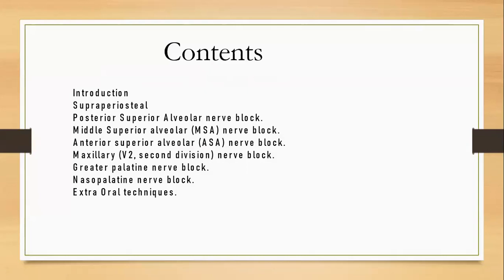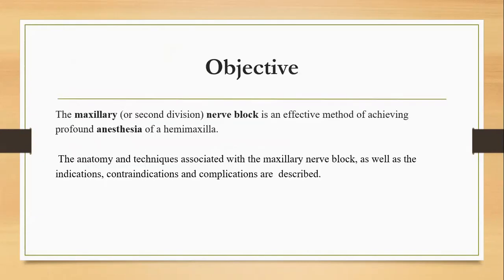First, we will deal with the introduction part, then the supraperiosteal injection, the PSA nerve block, the middle superior alveolar nerve block, the anterior superior alveolar nerve block, the maxillary nerve block, the greater palatine nerve block, the nasopalatine, and the extraoral techniques as well. The objective is that the maxillary or second division nerve block is an effective method of achieving profound anesthesia of a hemimaxilla, and the anatomy, techniques, indications, contraindications, and complications are well described here.